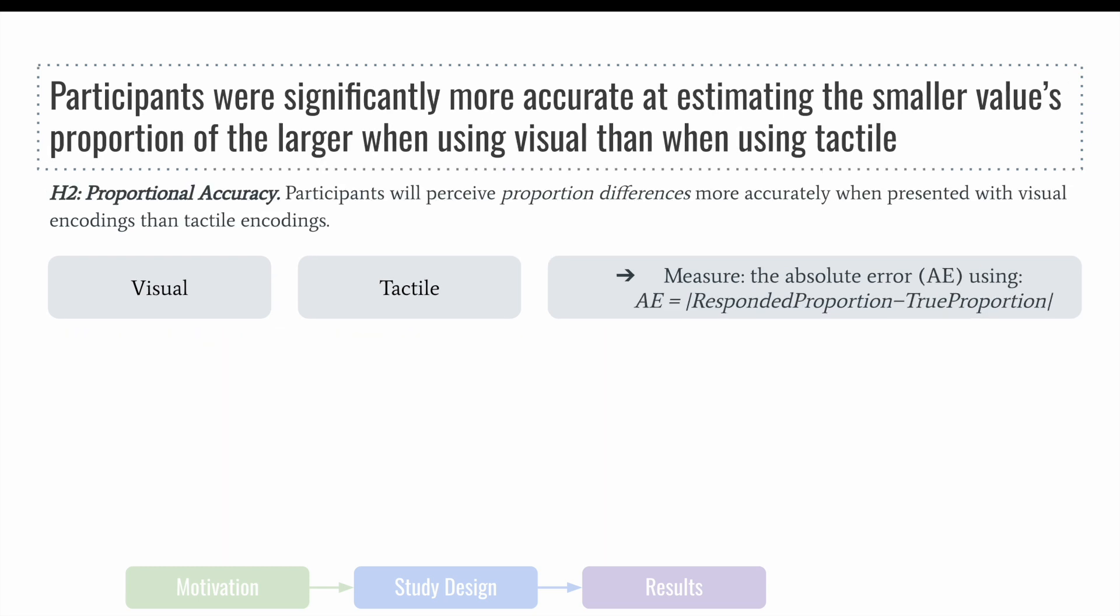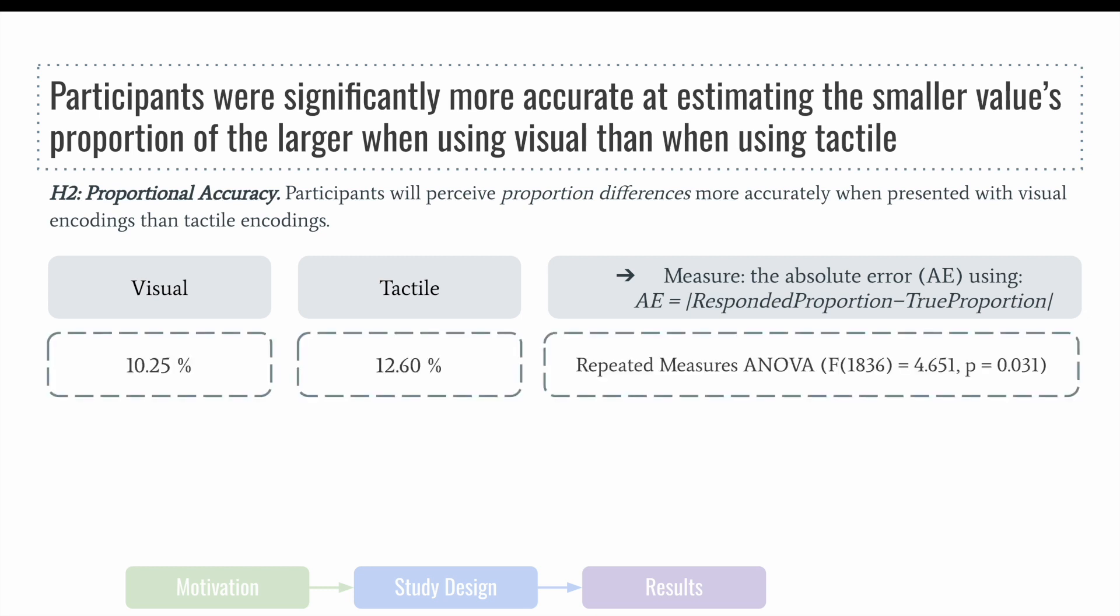For our second hypothesis, we found that on average, participants had a slightly lower absolute error in the visual condition than the tactile condition. After applying an aligned rank transform, we used a repeated measures ANOVA and found a significant main effect of condition on participants' accuracy when making proportional estimates.